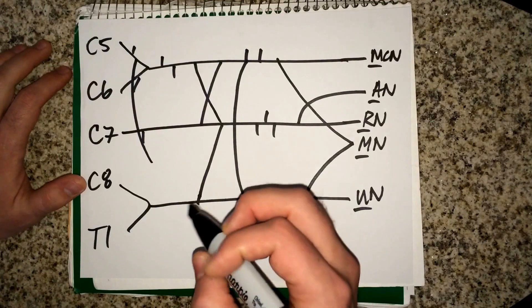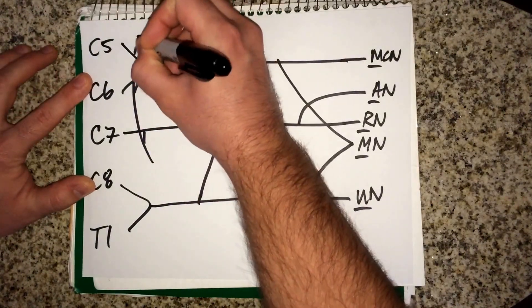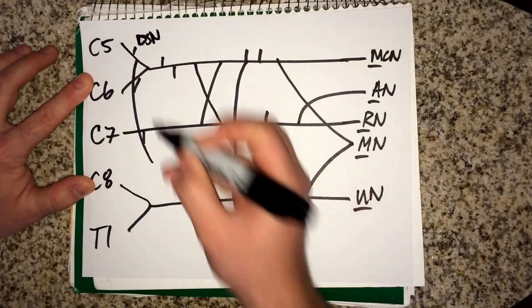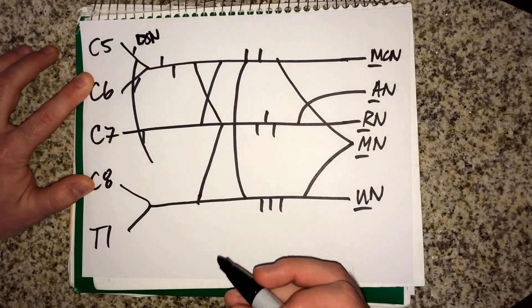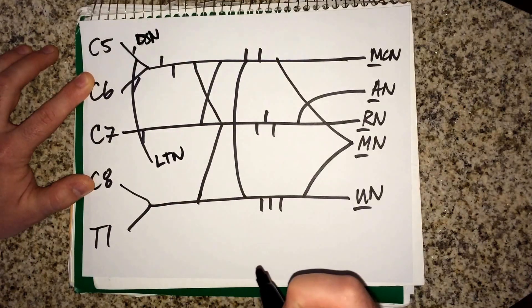Let's go ahead and label the rest of this though. You got your dorsal scapular nerve over here. This one that's kind of long, it's a hint because it's your long thoracic nerve.